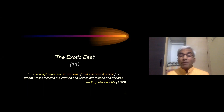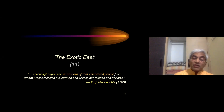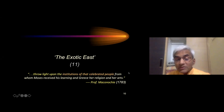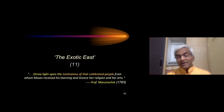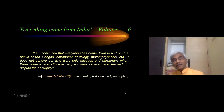Professor Mackenzie says: 'Throw light upon the institutions of that celebrated people from whom Moses received his learning and Greece her religion and her arts.' He is talking about Moses, who is at least a thousand years before Christ, and about Greece, which was at least 500 years before Christ. He says that even those people received their learning, religion, and arts from India. This is the opinion of Professor Mackenzie in 1783 in a letter written to his British masters.